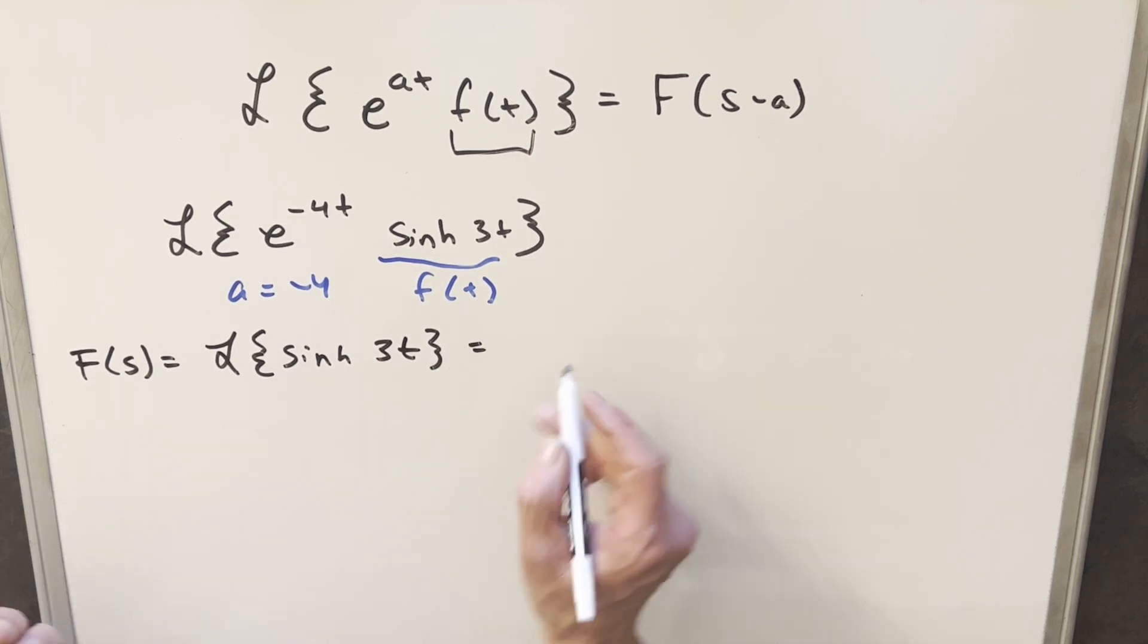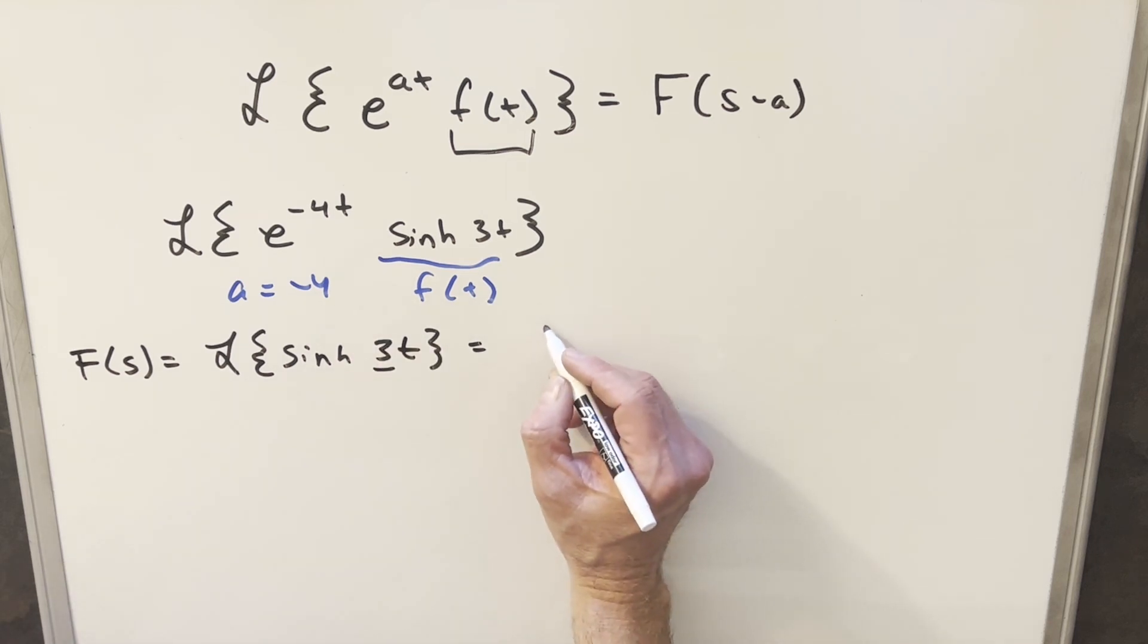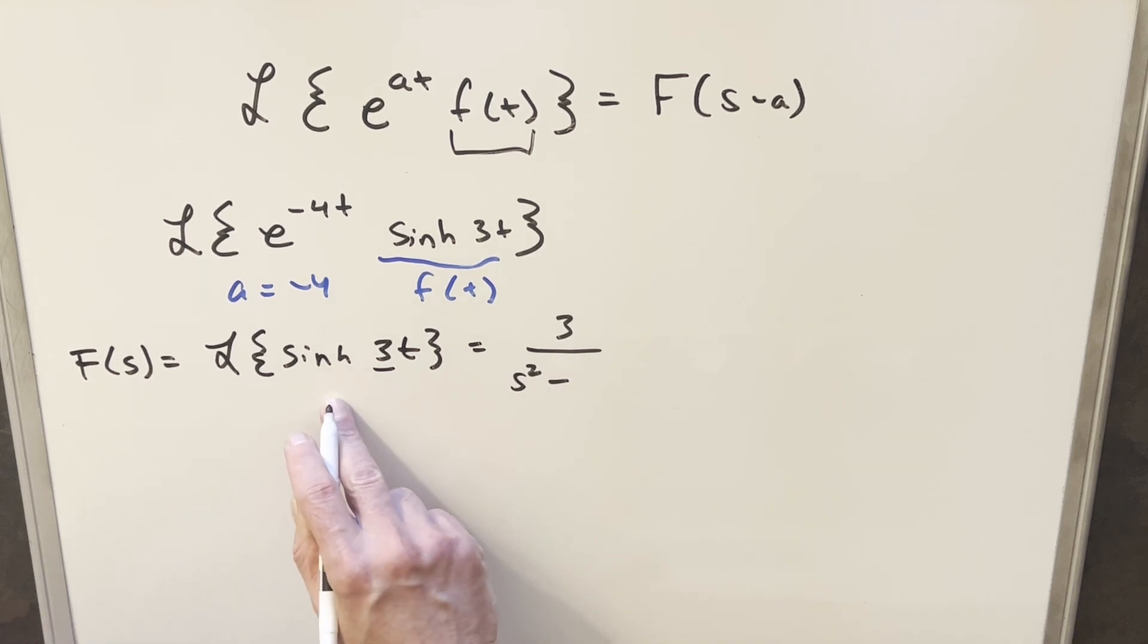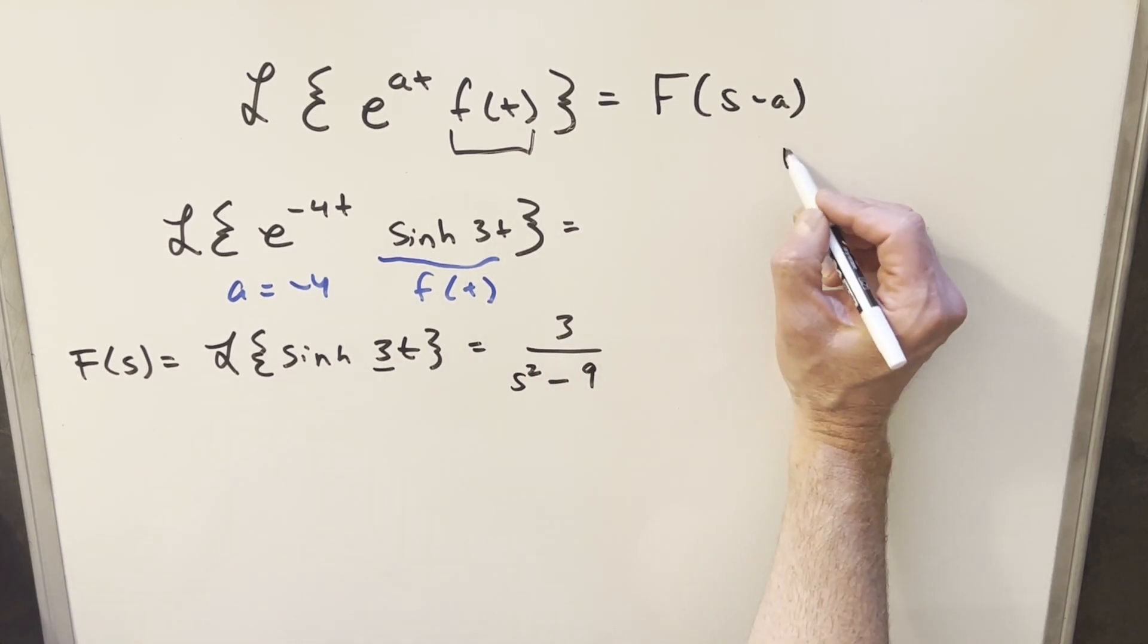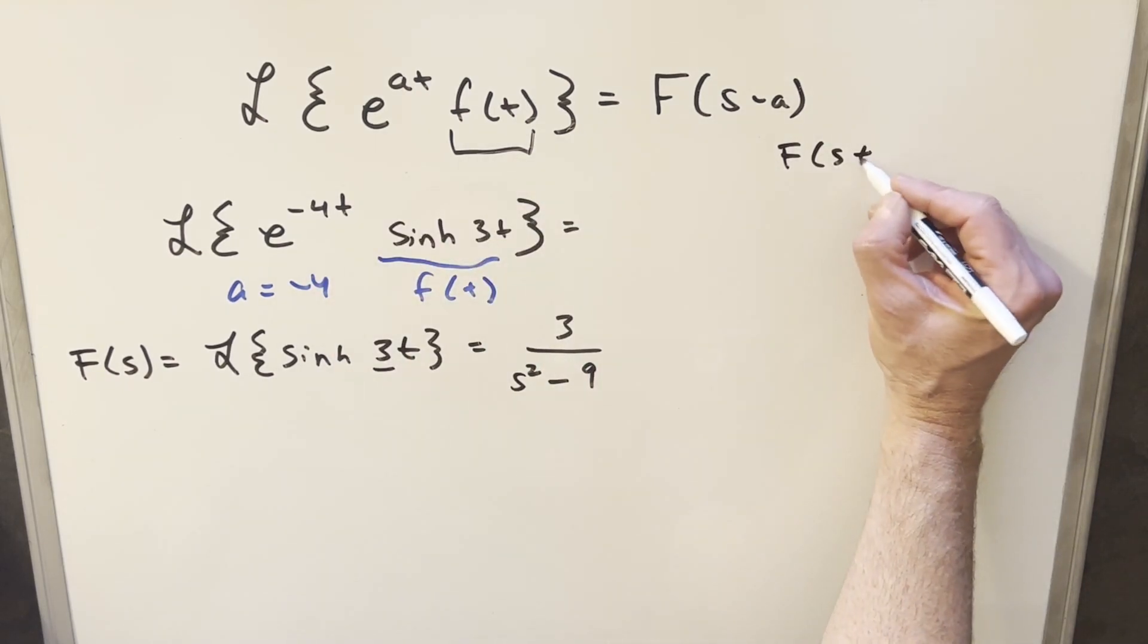And so what we want to do here, we want to find f of s minus minus 4, f of s plus 4. So we just need to input s plus 4 into our variable here. So this is going to give me 3 over s plus 4 squared minus 9.